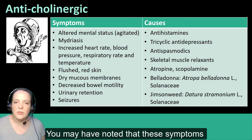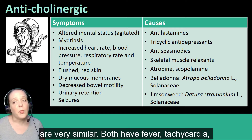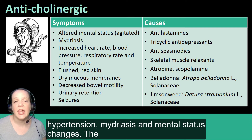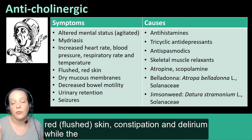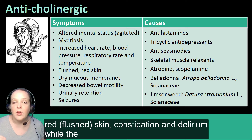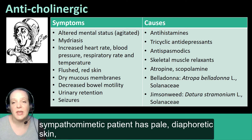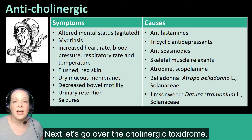You may have noted that the symptoms of the anticholinergic and the sympathomimetic toxidromes are very similar. Both have fever, tachycardia, hypertension, mydriasis, and mental status changes. The difference is that the anticholinergic patient has dry, red, or flushed skin; constipation; and delirium, while the sympathomimetic patient has pale, diaphoretic skin; increased gastrointestinal motility; and is typically agitated.